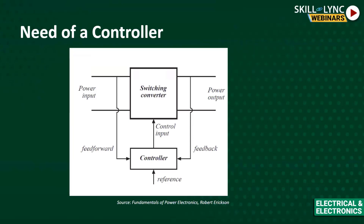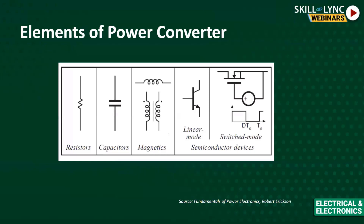The basic elements of a power converter include resistors, capacitors, magnetics, linear mode devices, and switch mode devices. Magnetics are not used in the control signal path because they introduce delays for signal processing. Linear mode devices and resistors are not used in the main power processing path - as shown earlier, both the resistor and the transistor in active region are lossy. Magnetics are not used in the control input path. These are the elements used in a power converter.